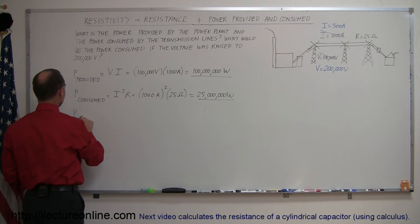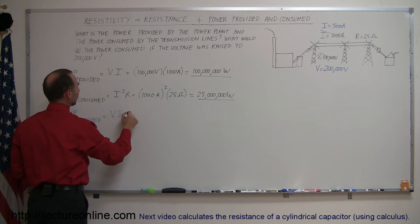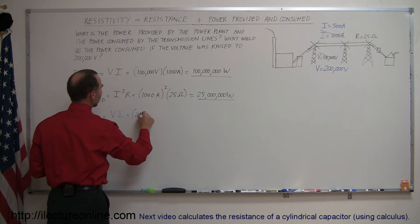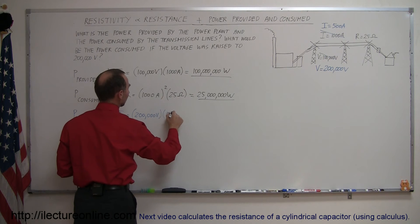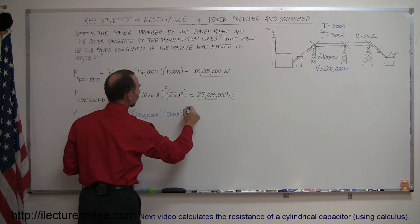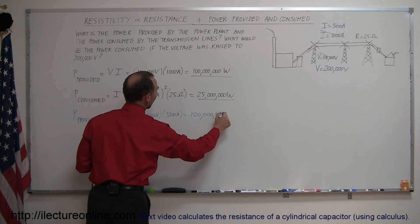So assuming that the power provided stays the same, so power provided now would be equal to V times I, and so we now have double the voltage but now we only need half the current, and we still would be provided 100 million watts of power.